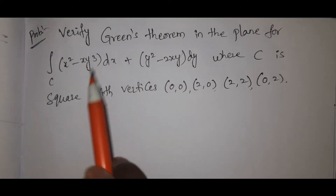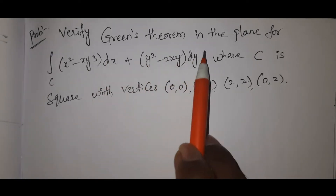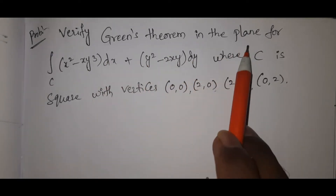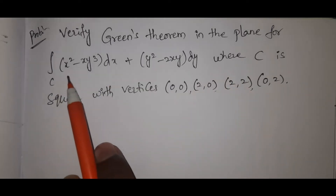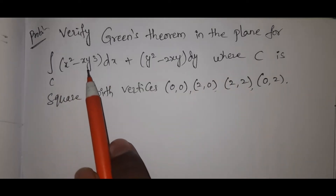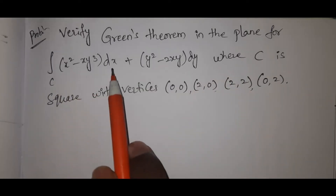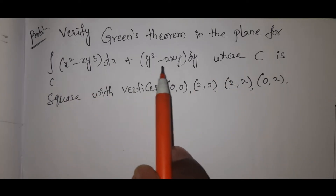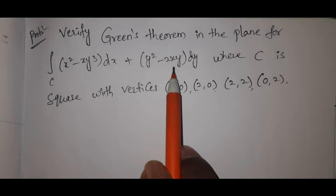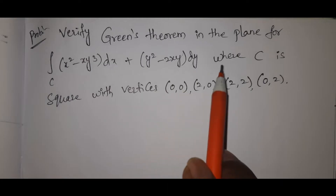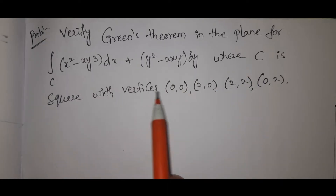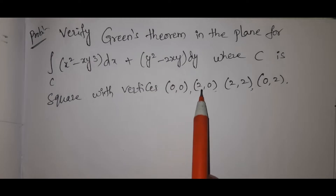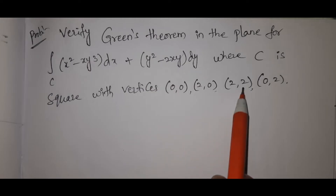Verify Green's Theorem in the plane for the integral of (x squared minus x·y cubed) dx plus (y squared minus 2xy) dy, where C is the square with vertices (0,0), (2,0), (2,2), and (0,2).